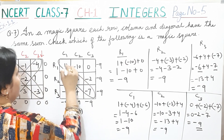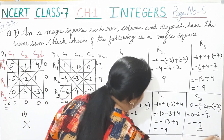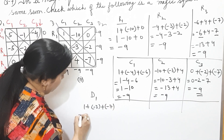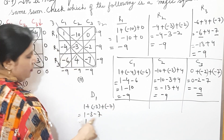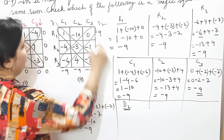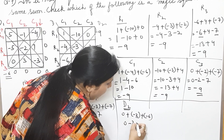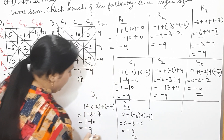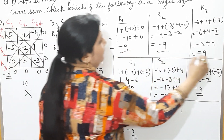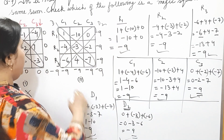Now let's check the diagonals. Diagonal 1: 1 + (-3) + (-7) = 1 - 3 - 7 = -9. Diagonal 2: 0 + (-3) + (-6) = 0 - 3 - 6 = -9. Both diagonals also give -9. So all rows, all columns, and both diagonals give the same answer: -9. Therefore, the second square is our magic square.